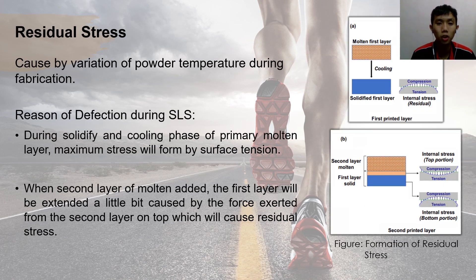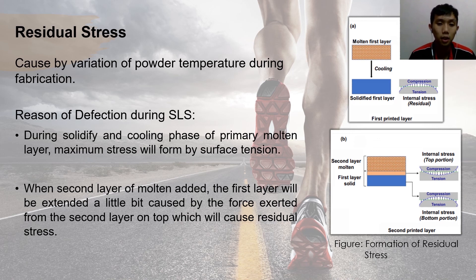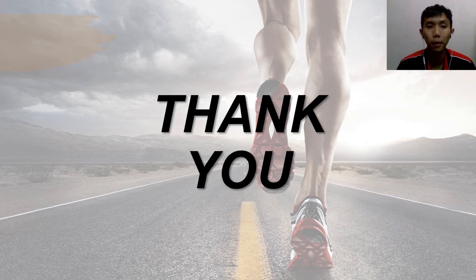Lastly, there is residual stress caused by variation of powder temperature during the process. During the solidification and cooling phase of the first layer, maximum stress forms due to surface tension. When the second layer is added, the first layer will extend because of the force exerted from the second layer on top, causing thermal stress in the AFO product. That's all from me and my teammates. Thank you very much.